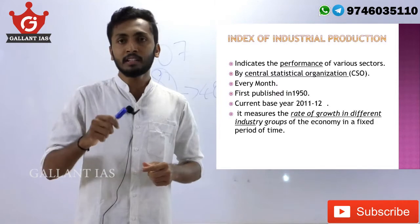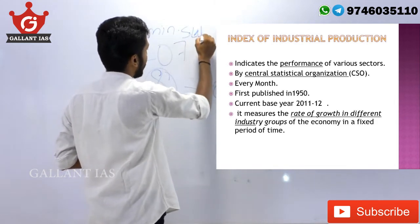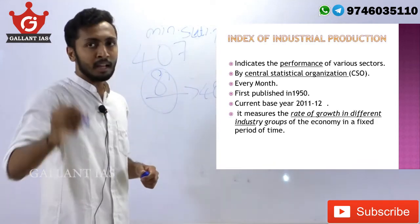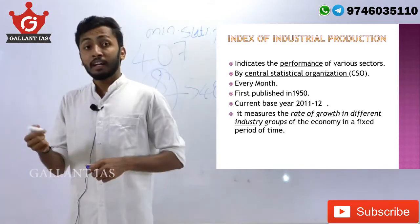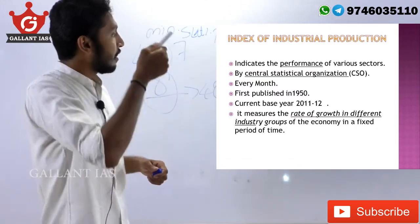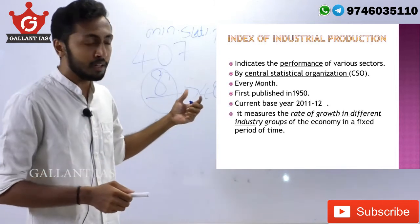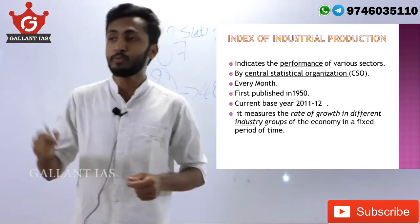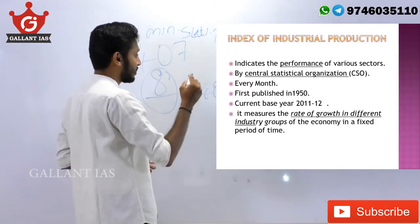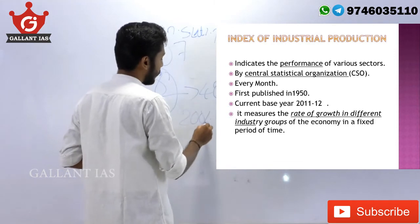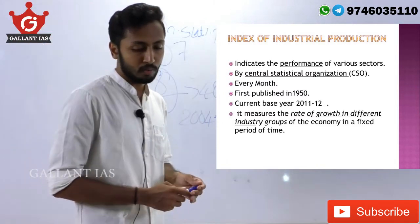The IIP is published by the Central Statistical Organization under the Ministry of Statistics and Programme Implementation. The Index of 8 Core Industries is compiled and published by the Office of Economic Advisor under the Ministry of Commerce and Industry. It is a monthly publication, first published in 1950. The current base year is 2011-12, and the previous base year was 2004-05. These base years are the same for both the IIP and the Index of Core Industries.